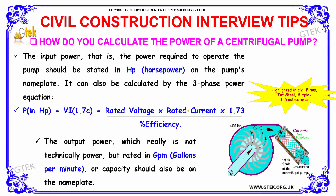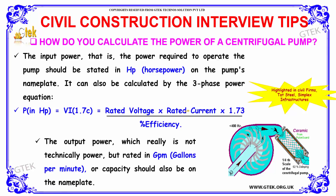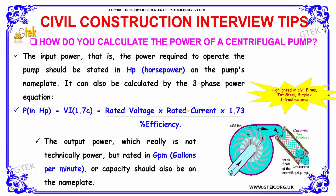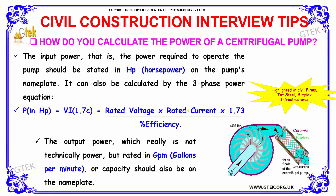The output power — technically the capacity — is rated in GPM (gallons per minute) and should also be found on the nameplate. This is how you calculate the power of a centrifugal pump.